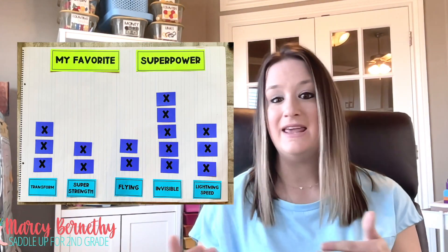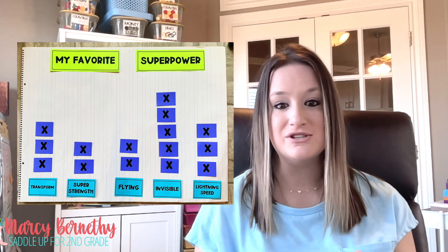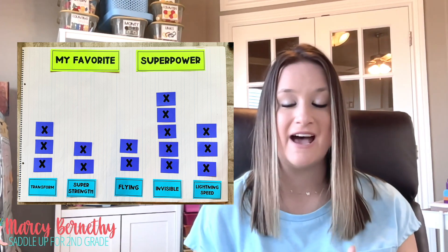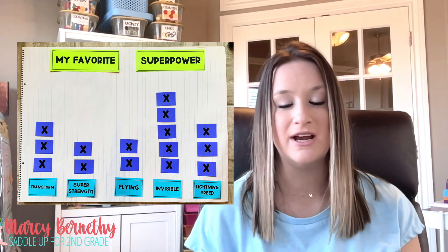Each time we create a whole group graph like this, I am reviewing the vocabulary of the different parts of the graph, and then we are talking about the frequency — how many times does each number or category occur? So in this example, because five students chose invisible as their favorite superpower, the frequency for that category is the number five. We want to provide students with practice reading and creating line plots with examples that are going to engage their interest.